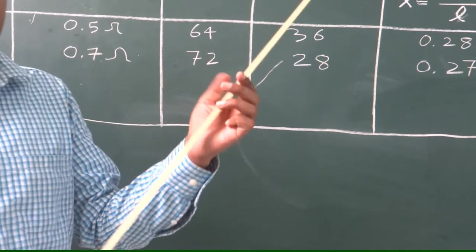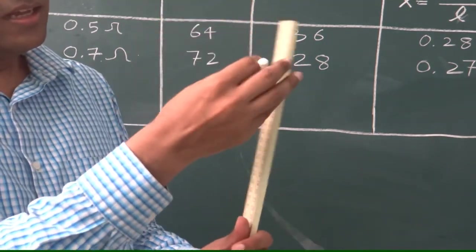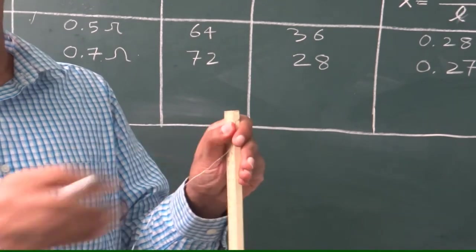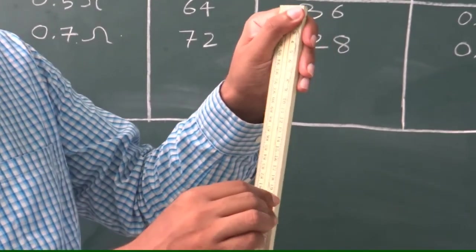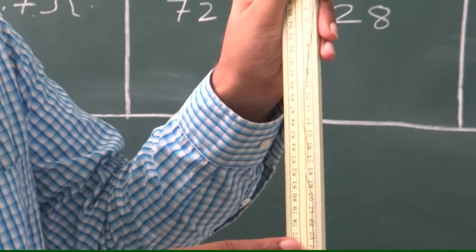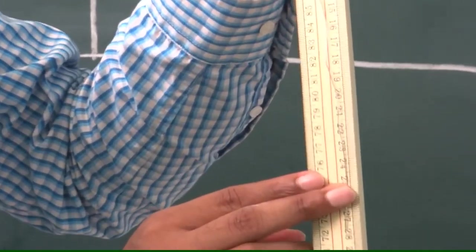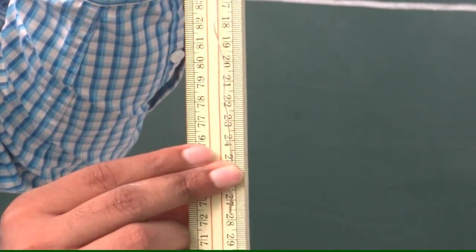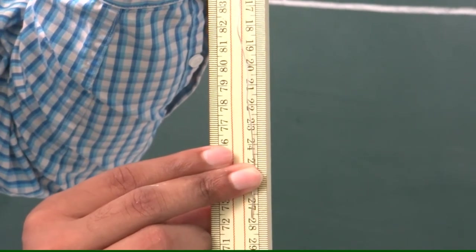Next use a meter scale. Carefully place this wire and determine the length. As you can see, the length comes out to be 28 cm.